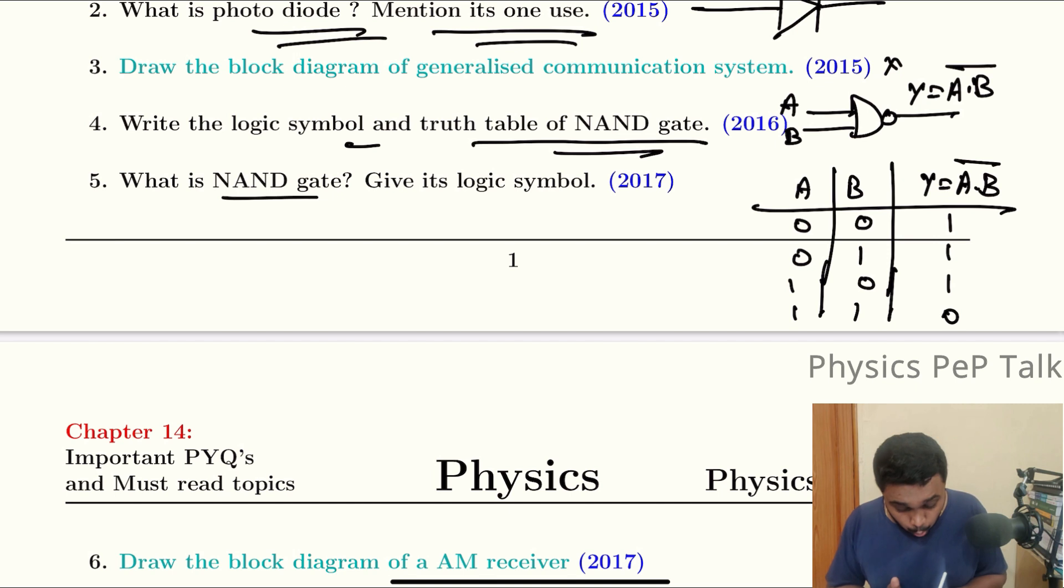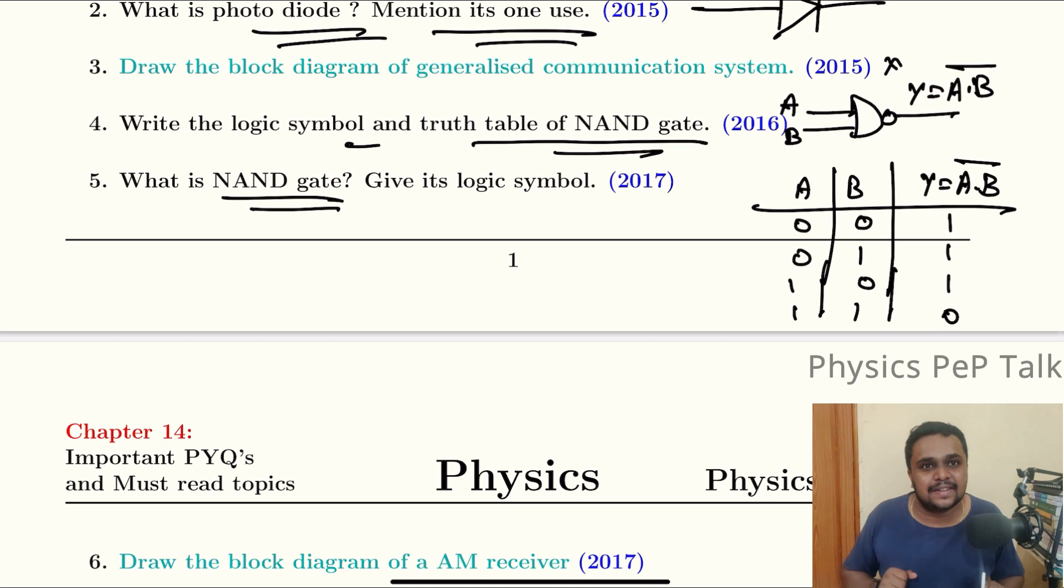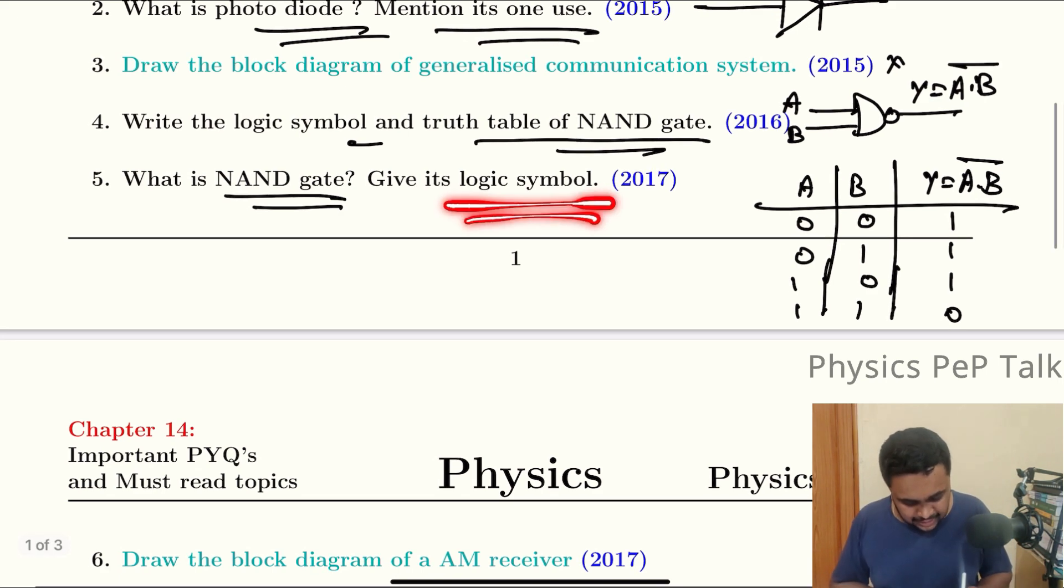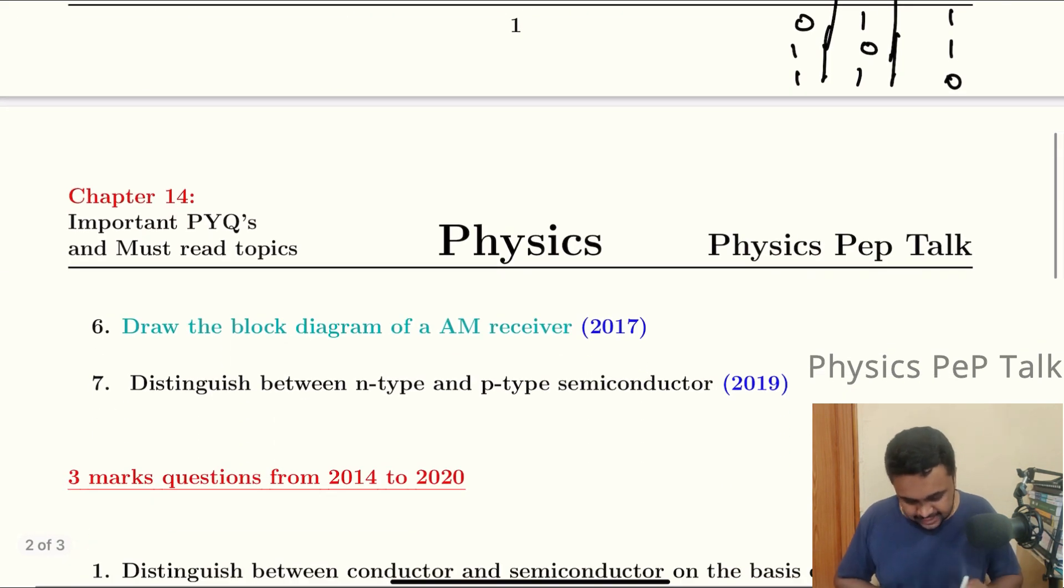Next question: What is NAND gate? NAND gate is the universal logic gate having more than two inputs, and its output is high when one of the input is low.